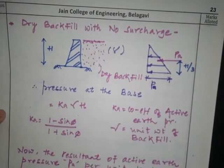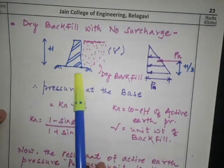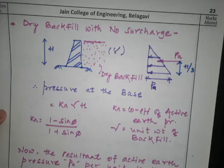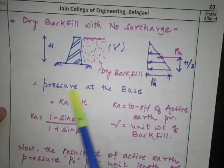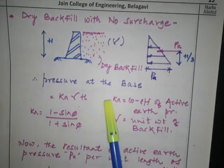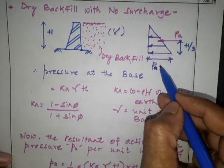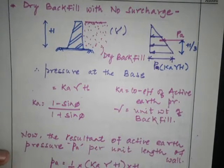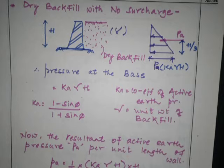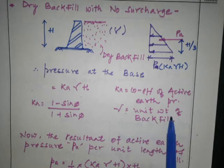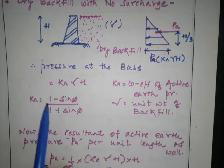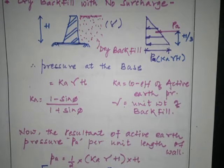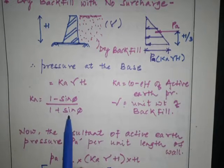For the condition of dry backfill with no surcharge, consider a vertical retaining wall with backfill of density gamma and height H. This develops a triangular pressure distribution. The active earth pressure at the base is k_a × γ × h. Here, k_a is the coefficient of active earth pressure, γ is the unit weight of backfill, and k_a is calculated as (1 − sin φ) / (1 + sin φ), where φ is the angle of internal friction.